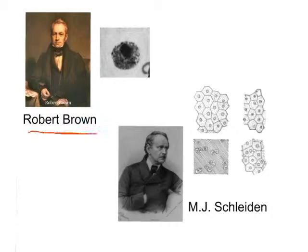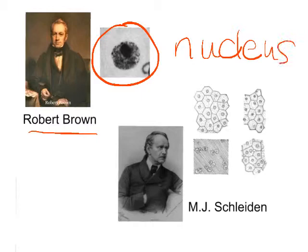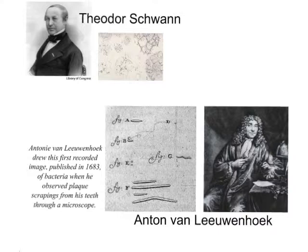We have another scientist, Robert Brown, who in 1831 noticed a dark spot inside of the cell and decided to name it a nucleus. He called that dark spot a nucleus, not yet sure what it did. Then a man named M.J. Schleiden continued this work and reaffirmed the idea that cells contain nuclei and fluid.